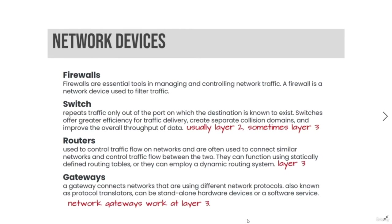Network devices include firewalls, switches, routers, and gateways. Firewalls are essential tools in managing and controlling network traffic; a firewall is a network device used to filter traffic. Switches repeat traffic only out of the port for which the destination is known to exist, offering the greatest efficiency for traffic delivery, creating separate collision domains, and improving overall throughput of data. Switches usually operate at OSI Layer 2.